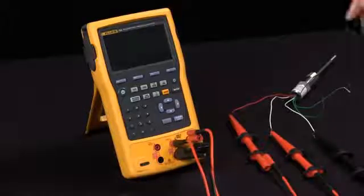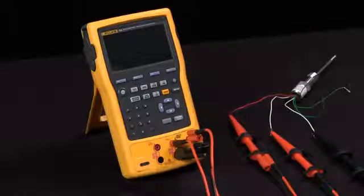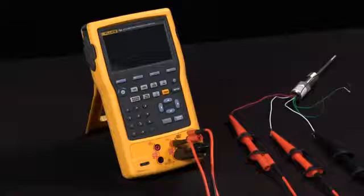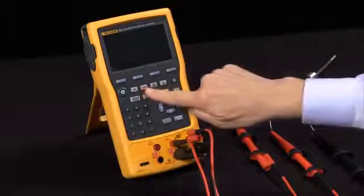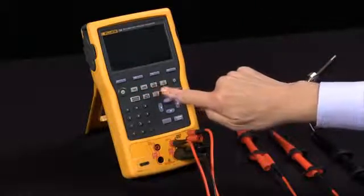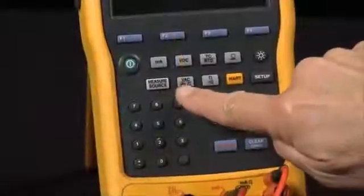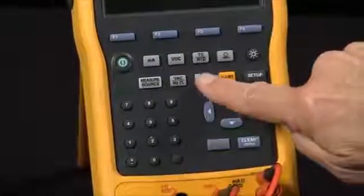The Fluke 754 documenting process calibrator can source and measure a wide variety of parameters: milliamps, DC volts, thermocouples, RTDs, pressure, volts AC, frequency, ohms, and continuity.